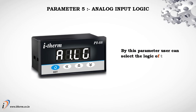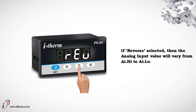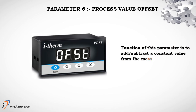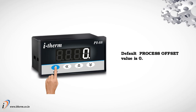Parameter 5: Analog Input Logic. By this parameter, the user can select the logic of the analog input. If direct is selected, the analog input value will vary from analog input low to analog input high. Parameter 6: Process Value Offset. The function of this parameter is to add or subtract a constant value from the measured process value to obtain the final process value for control applications. The default process offset value is 0.